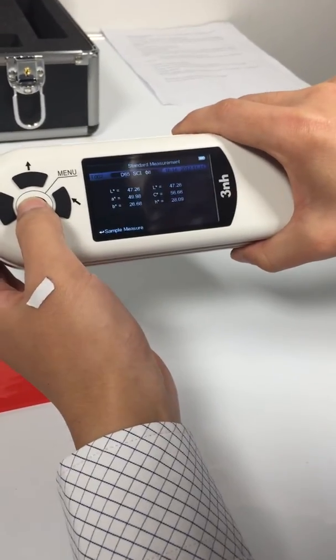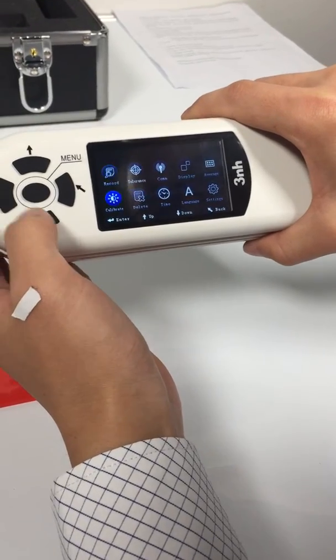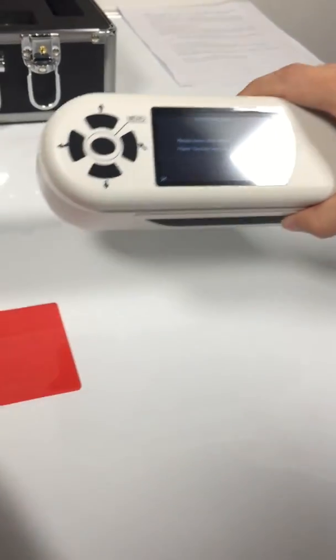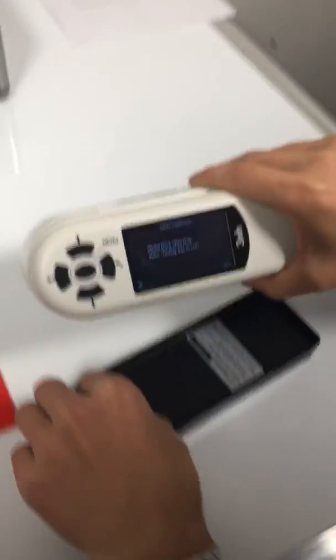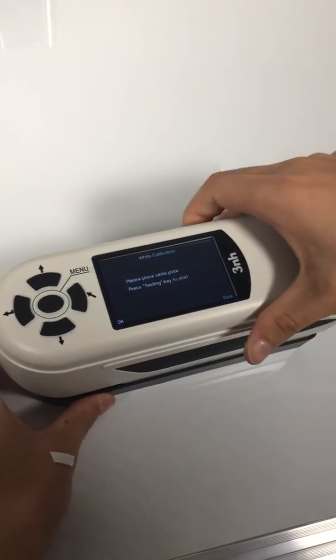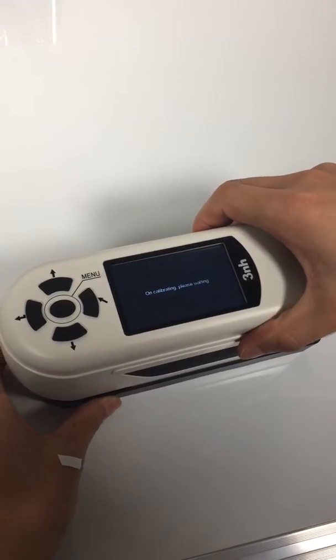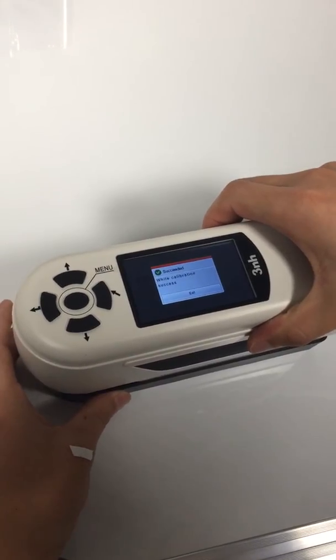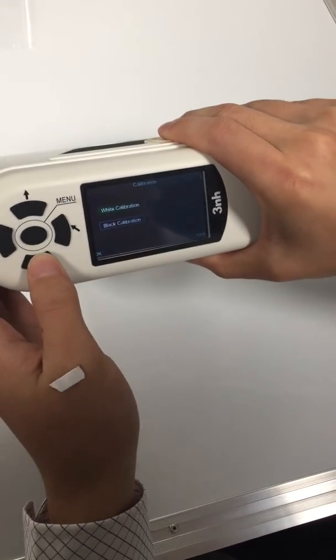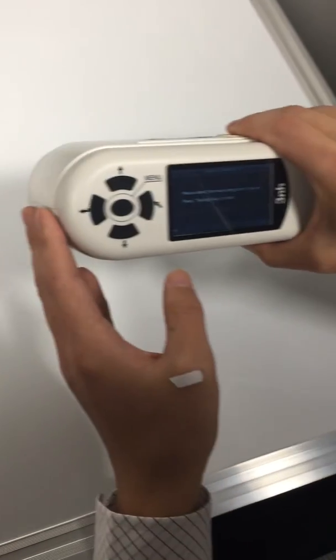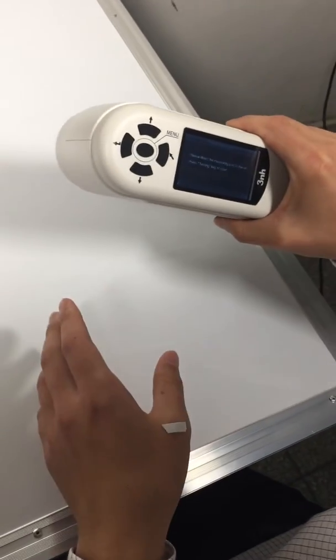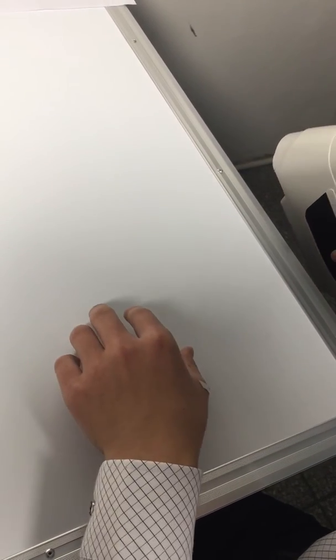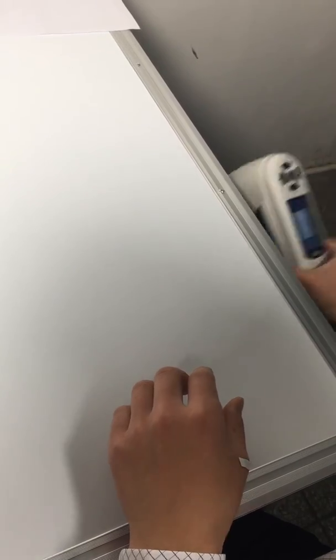First we do white calibration. And then black calibration. For black calibration, we do it in a dark space, like under the desk. It's done.